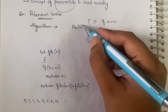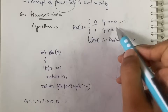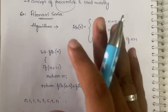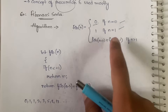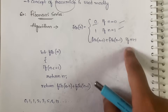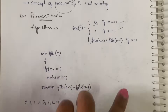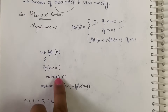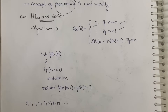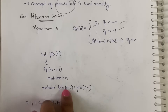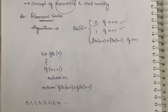If n equals 0, fib(0) is directly 0; fib(1) is directly 1. If the value of n is greater than 1, then fib(n) = fib(n-2) + fib(n-1). In the algorithm: int fib(n) — if n is less than or equal to 1, return n directly; otherwise return fib(n-2) + fib(n-1).